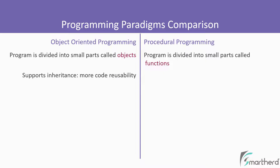Since the OOP paradigm supports inheritance, we can reuse the code to the maximum extent. But on the other hand, since we don't have objects and classes, support for inheritance is absent. So there is limited code reusability.